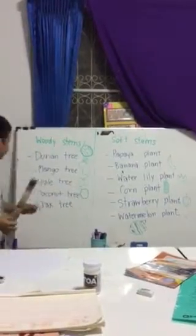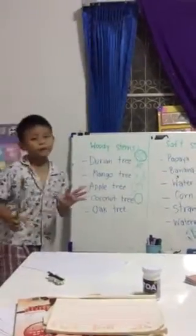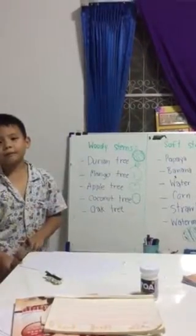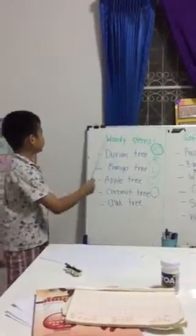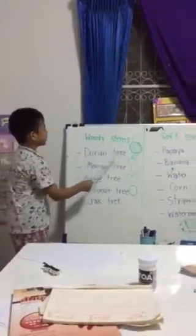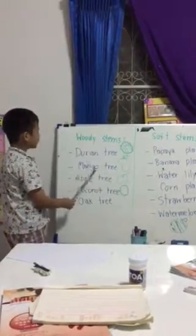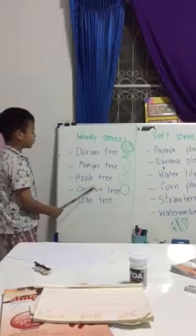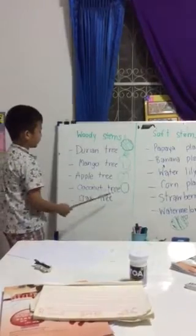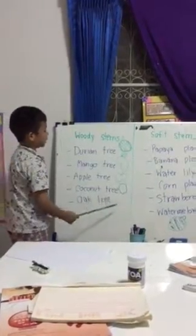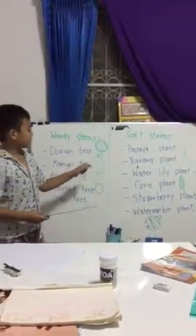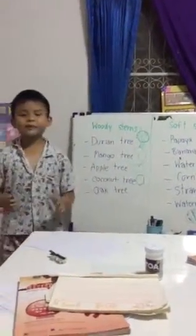There are five woody stem plants that I know. Here's durian tree, mango tree, apple tree, coconut tree, and oak tree.